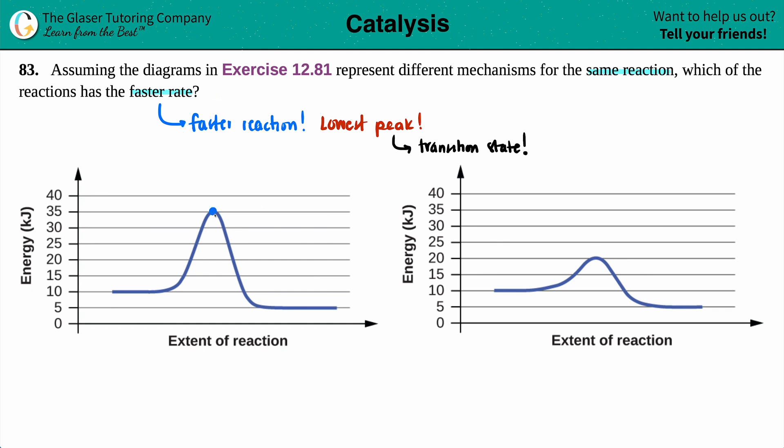This peak is all the way up here, at 35 kilojoules. This peak is down, at 20. So, I can't even say which one has the faster rate. There's no A or B. So, I'm just going to box the whole one off. This one, the one that has the smaller peak, is the faster one. And that is the end of the video.